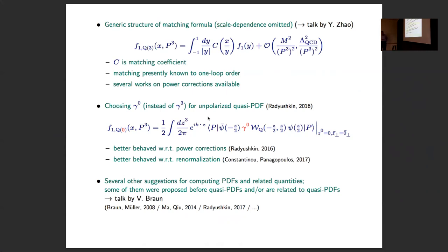We also have power corrections, target mass corrections, and other power corrections. Now, another interesting development was just raised by Radyushkin. Does this limit things to leading twist sorts of things? Regarding the matching criteria — I don't think it's limited to leading twist, but so far, to the best of my knowledge, it has not been explored.